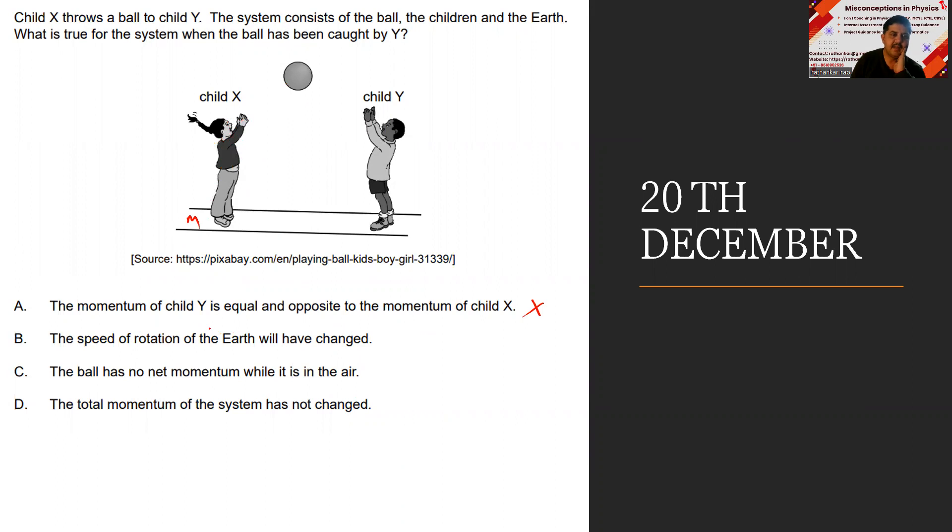Will the speed of rotation of the earth be changed because of this? When can the speed of rotation of the earth change? Two persons are standing and playing here. This does not impart any other force, so definitely the speed of rotation will not have changed. The ball has no momentum while it is in the air—completely wrong because this has a mass, this has a velocity, and hence you should have m into v.